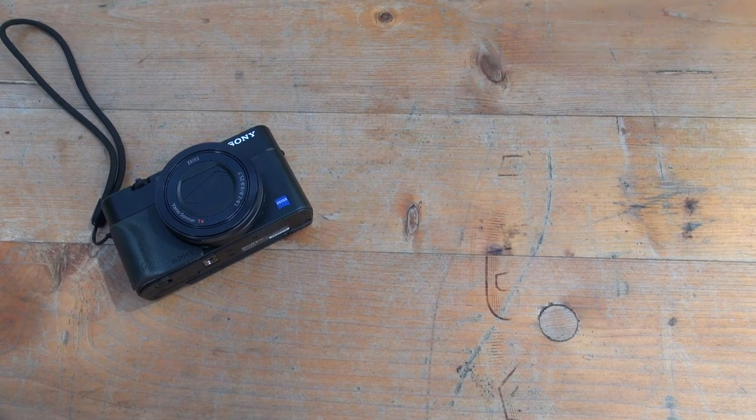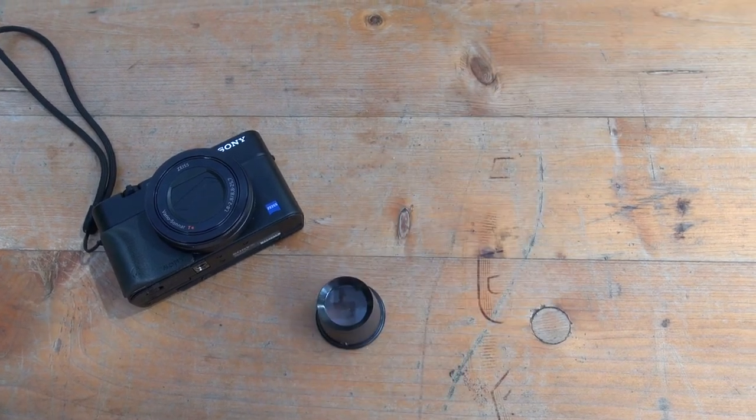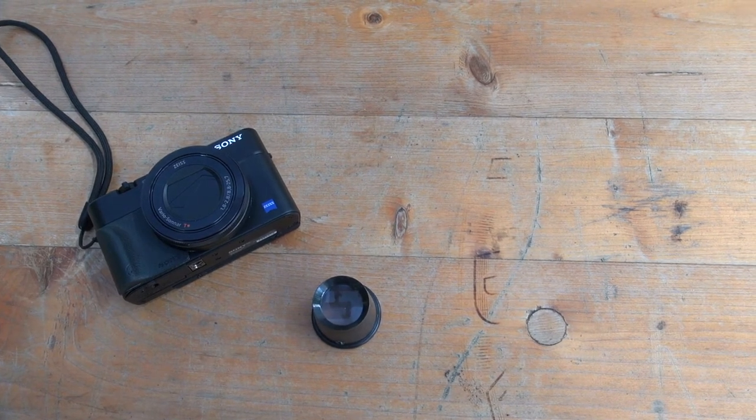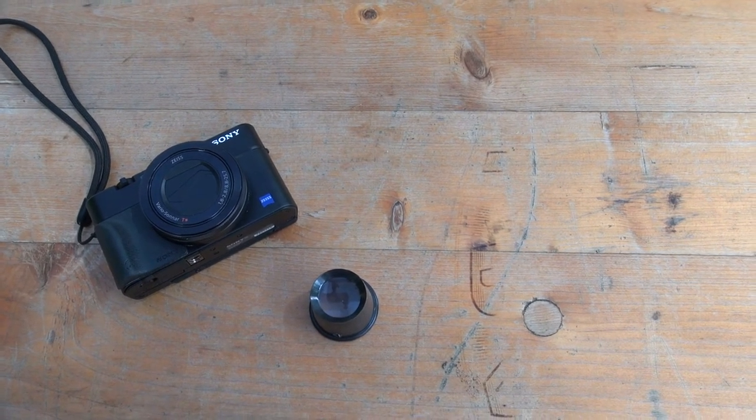First, buy a magnifier or even a set with different levels of magnification for less than $10 on the internet or at your watchmaker's shop.